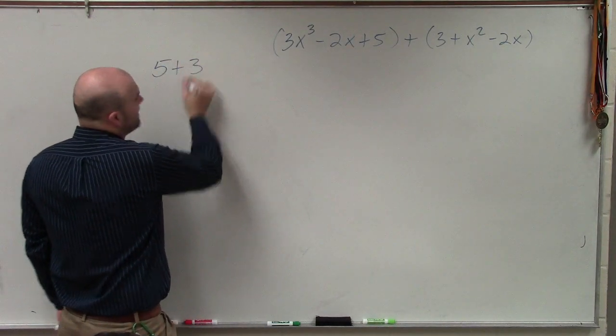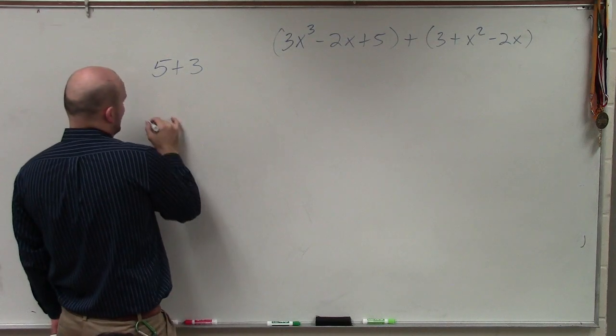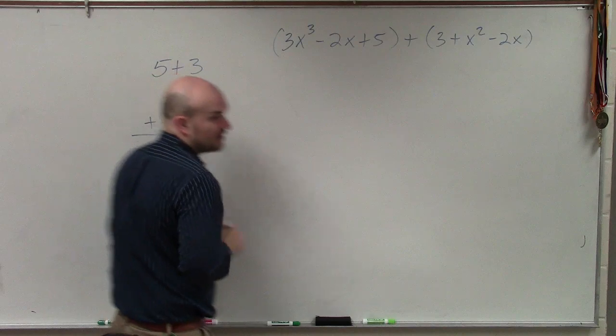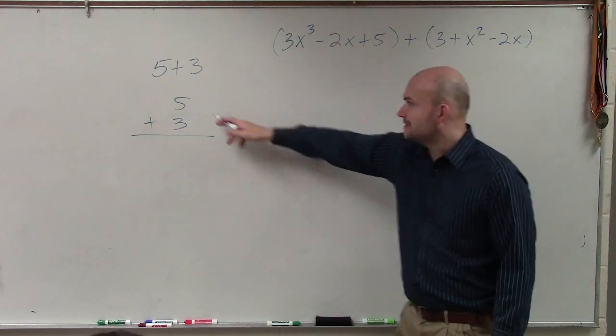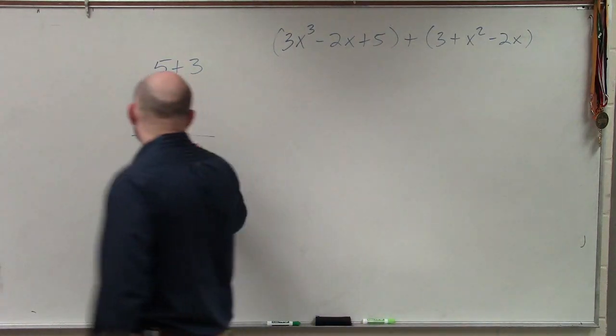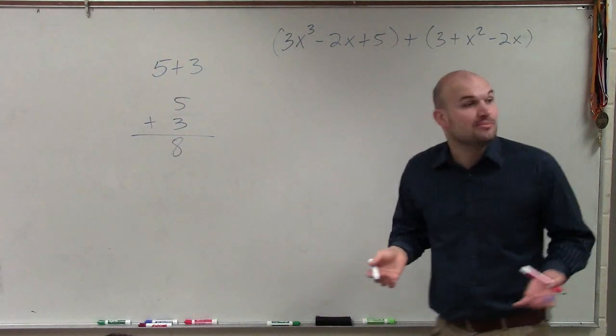The vertical method is basically, if I was going to say, what is 5 plus 3, you could write that—do you guys remember that from like second grade, right? You can write them vertically, and then you do 5 plus 3 equals 8. So we can apply the same thing.